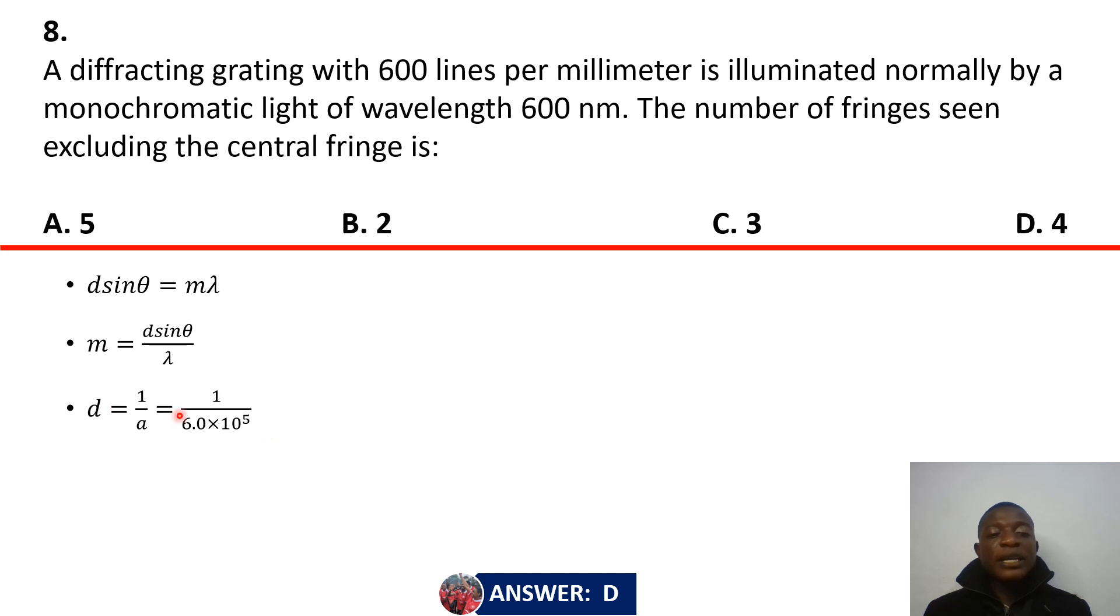Is d over lambda, right? But d there is the reciprocal of the diffraction grating specification. What number of lines exists per millimeter or per meter, right? So per millimeter, you have 600 lines. And then 600 lines per millimeter means that you have 600 times 10 to the 3 per meter, lines per meter. So if you reciprocate that, you get d. So this is our d. And then, now, you realize that the maximum possible order would be d over lambda, cosine theta which will be one, the maximum possible order, right?